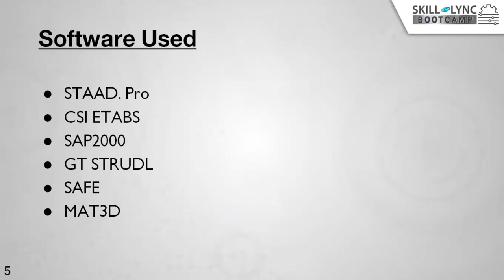I have listed the popular software in the field. Apart from these there are many software packages used nowadays, but for presentation purposes I have listed the popular ones. All the software requires the same amount of input and will give expected output in different formats. Examples include STAAD Pro, ETABS, SAP, GT STRUDL, SAFE, and Mat3D. STAAD Pro is a multi-purpose software — we can model any type of structure, apply any type of load, and run the analysis.